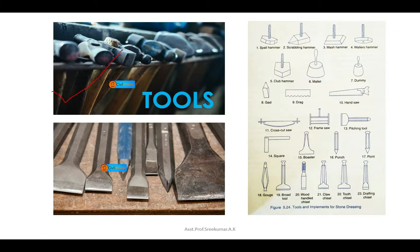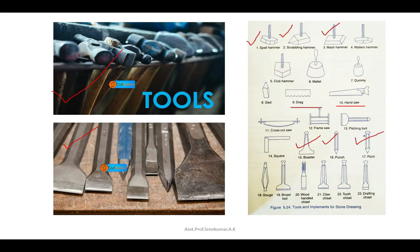Now let's look at the tools used for stone dressing. We have hammers, chisels, and other tools like the hand saw. Different kinds of hammers include the spell hammer, scrabbling hammer, mash hammer, etc. Different types of chisels include boosters, punch point, and other tools like the drag, hand saw, cross sketch saw, etc. Each type of tool is used to create each type of stone finish.